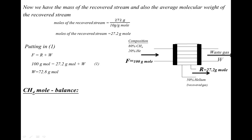Now we set up the component balance for methane. Writing the methane balance: feed fraction × feed moles = recovered fraction × recovered moles + waste fraction × waste moles. So: 0.8 × 100 = 0.5 × 27.2 + X × 72.8, where X is the mole fraction of methane in the waste stream.